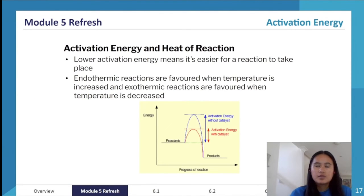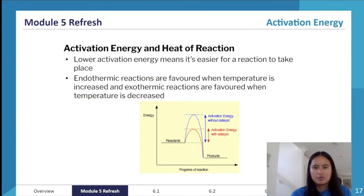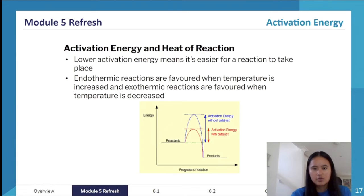Adding a catalyst decreases the activation energy and increases the rate of reaction, but it does not cause a shift in equilibrium. However, activation energy can help explain why endothermic reactions are favoured when temperature increases — endothermic reactions have a higher activation energy, and with increased heat, more particles can reach that energy threshold.